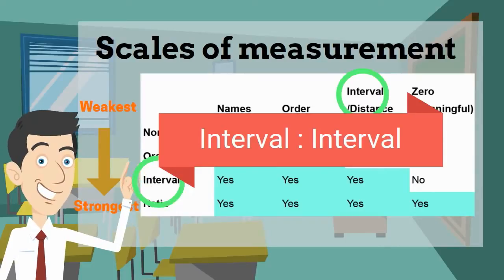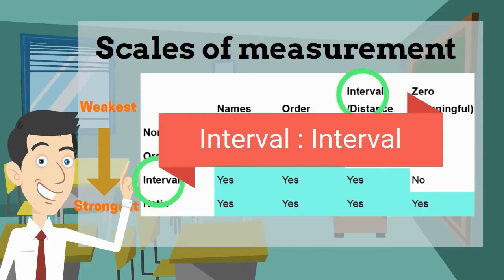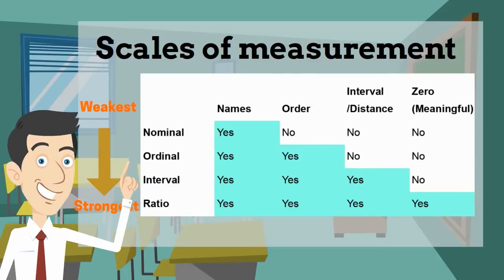But it's not necessarily five times hotter because for interval there's no meaningful zero here as well. What that means is zero degree is not no temperature, it's just a number representing the degree of temperature here.